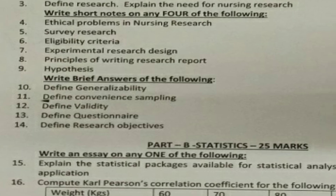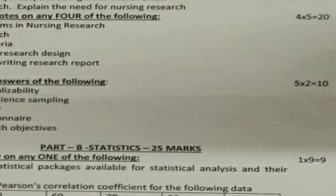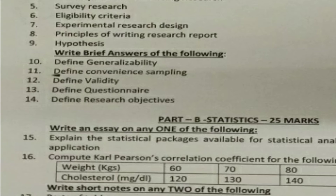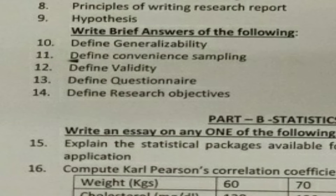Next is Brief Answers, for 2 marks each. They will give 5 questions and you have to answer all 5, for 5 × 2 = 10 marks. Question 10: Define Generalizability. Question 11: Define Convenience Sampling. Question 12: Define Validity. Question 13: Define Questionnaire. Question 14: Define Research Objectives.